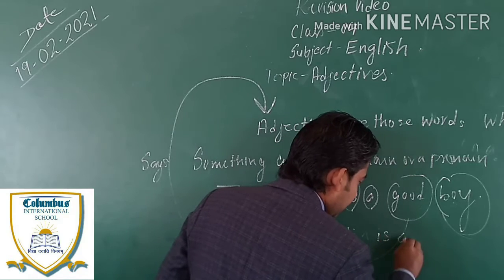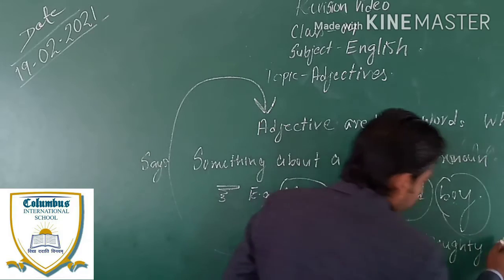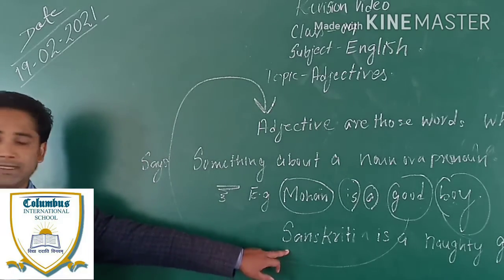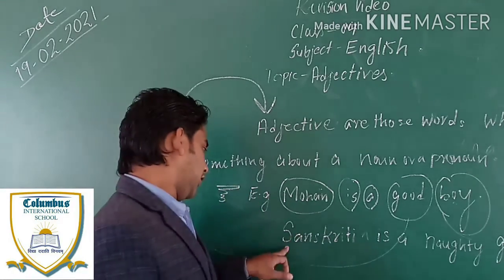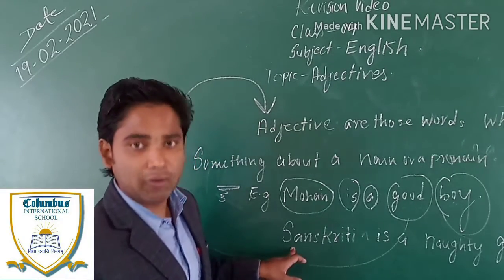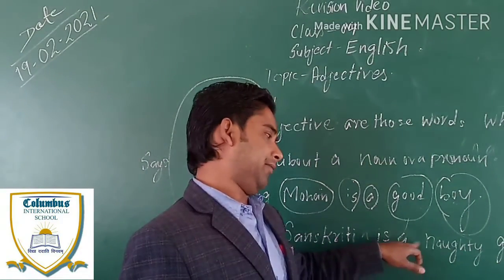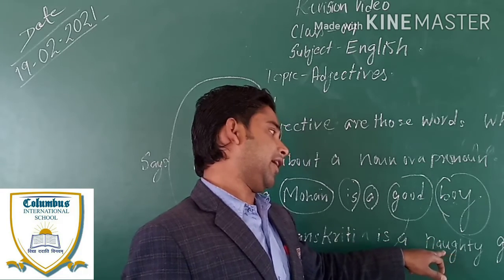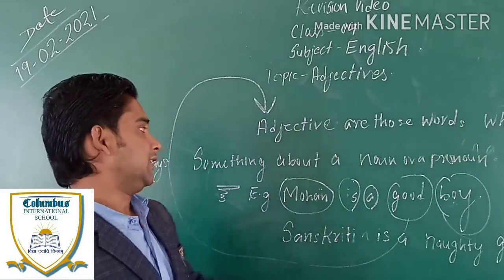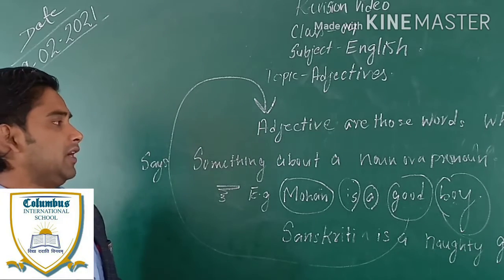'Sanskriti is a naughty girl.' Here, 'Sanskriti' is acting as a subject, which is a noun. 'Is' is a singular verb, 'a' is an article, and 'naughty' is an adjective which is telling us something about the noun 'girl'. So this is all about adjective — adjectives are those words which tell us something about a noun or a pronoun.